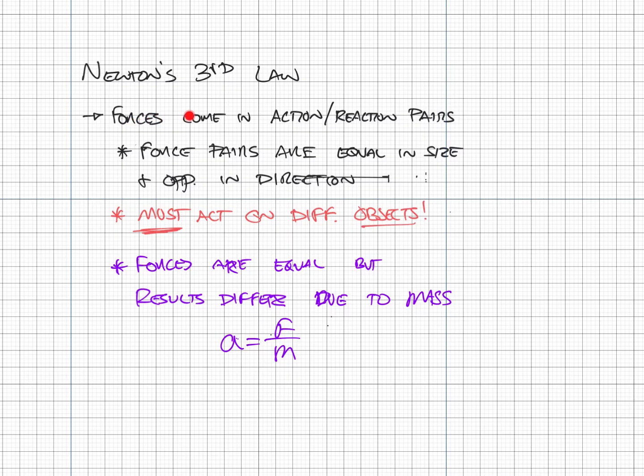Newton's third law states for every action there is an equal and opposite reaction. We rewrite this as forces come in action-reaction pairs. Force pairs are equal in size and opposite in direction. The most misunderstood concept is that these forces must act on different objects. Looking at an object on a table with gravity down and normal force up, these are not Newton's third law pairs because they both act on the same object.